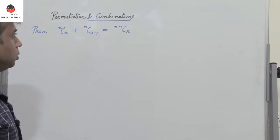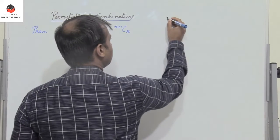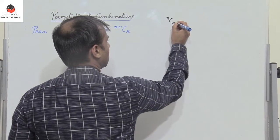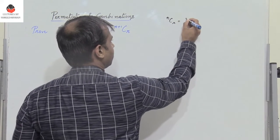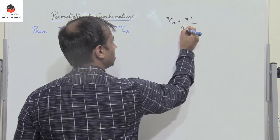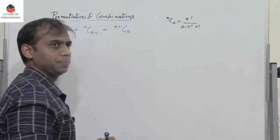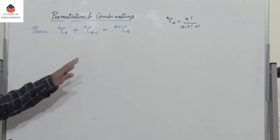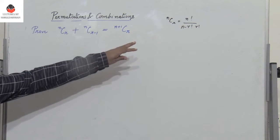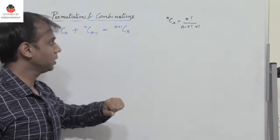We know that the formula for NCR equals factorial N divided by factorial (N minus R) into factorial R. This is the formula we know.